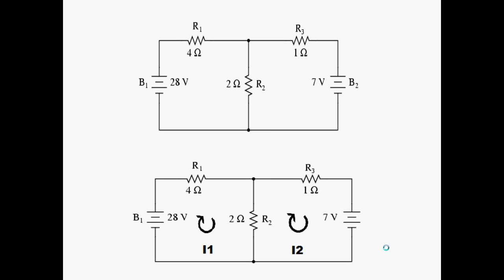Now let us apply Kirchhoff's voltage law to a system having two meshes. Step 1 remains the same: we have to assume the direction of the current. The direction has been assumed to be clockwise for both loops — I1 for loop 1 and I2 for loop 2, both in the clockwise direction. You can assume anti-clockwise direction as well.